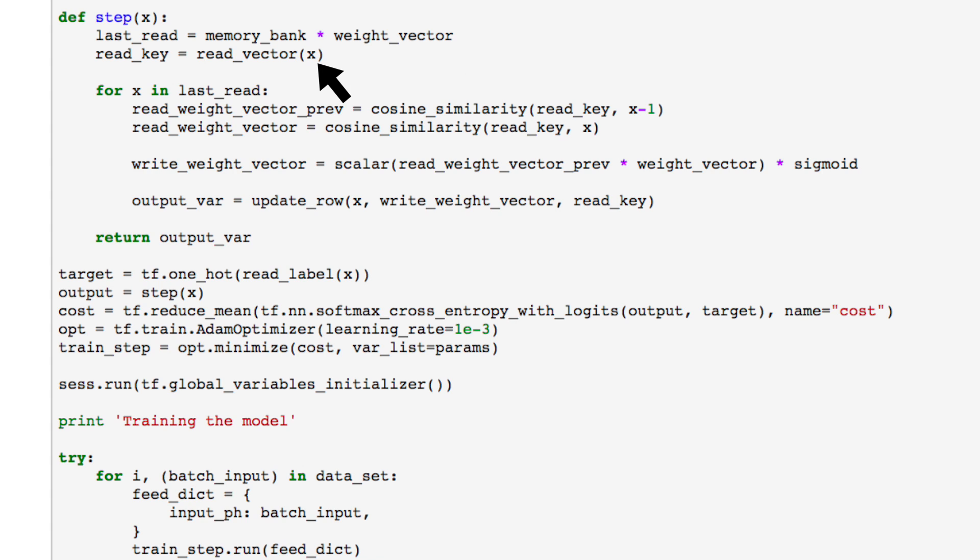For the given input x, the read vector will produce a key. We compare each key against each row in memory using the cosine similarity as a measure. This produces the read weight vector, which tells us how much each row should contribute to the linear combination. The difference here is that there is no extra parameter to control the read weight vector's concentration.